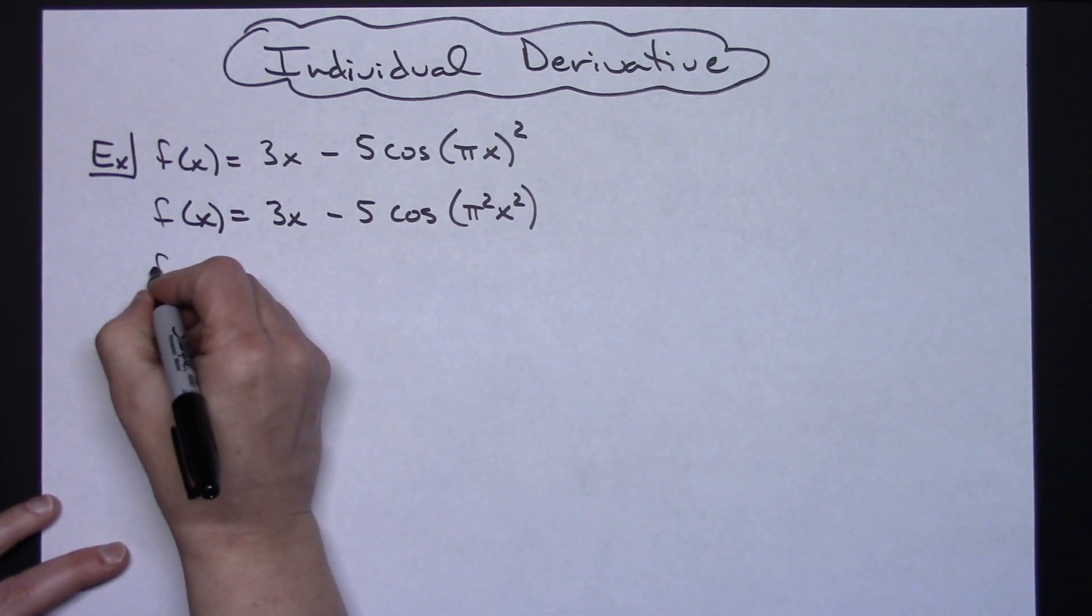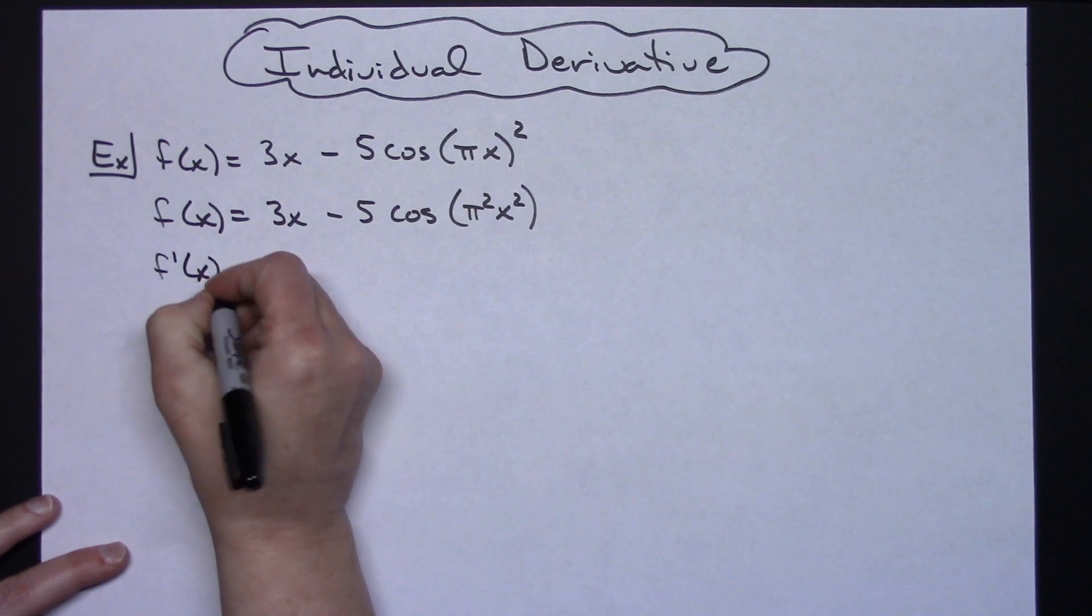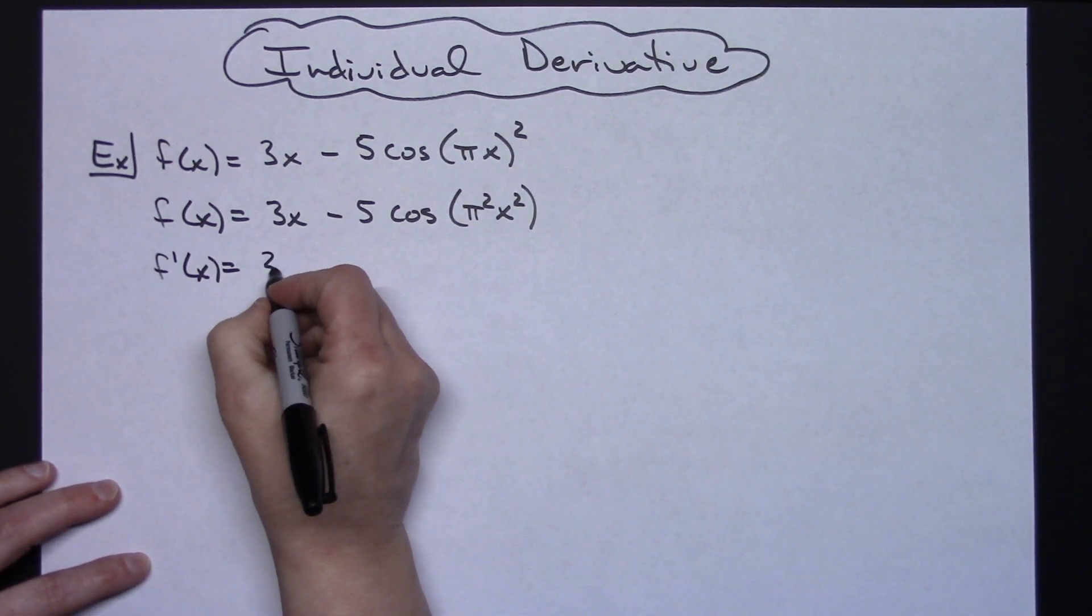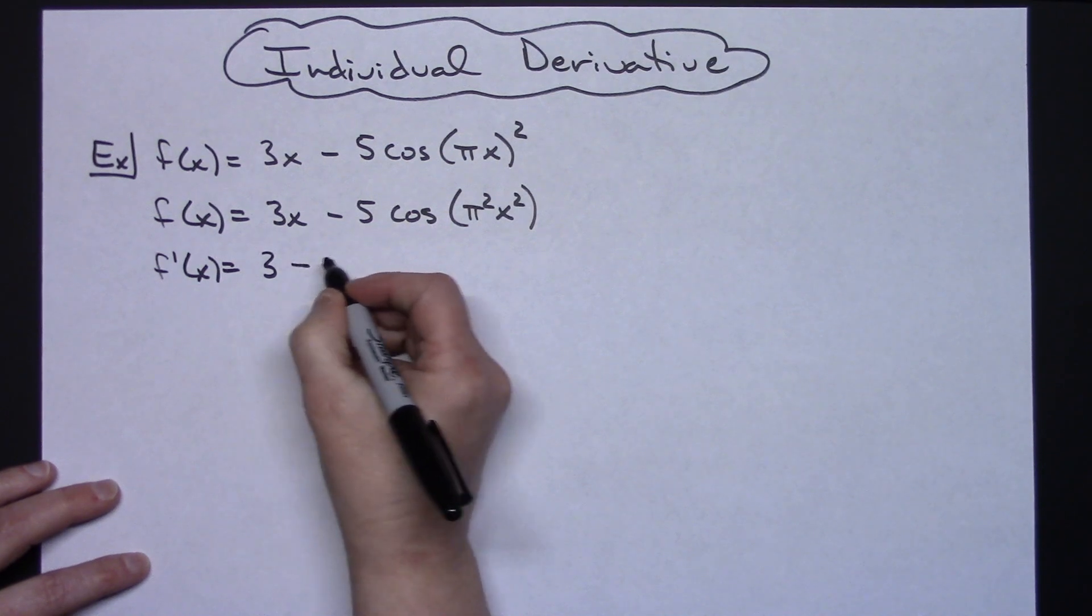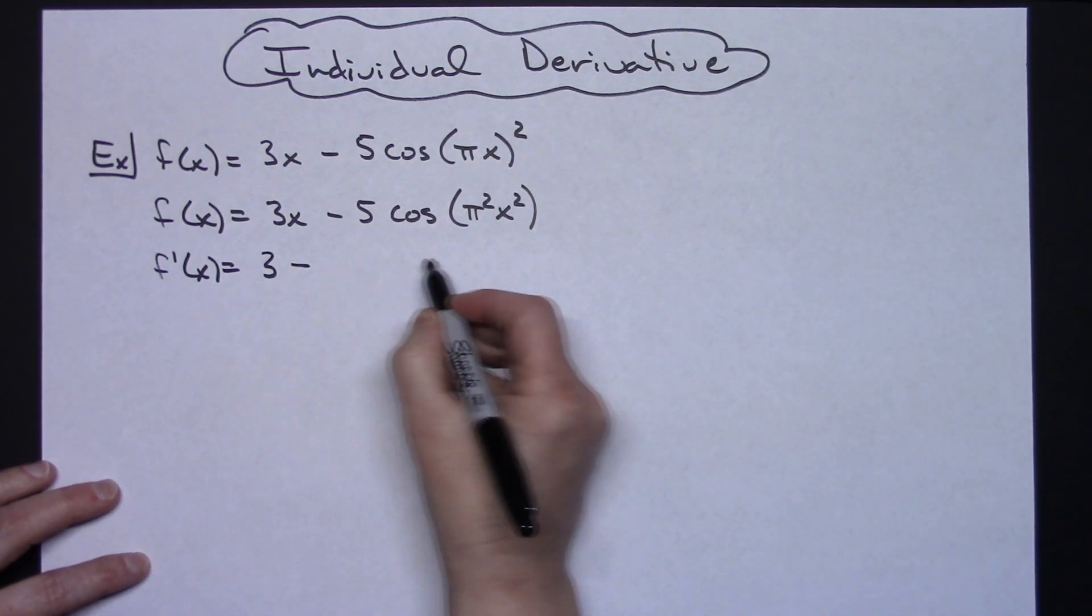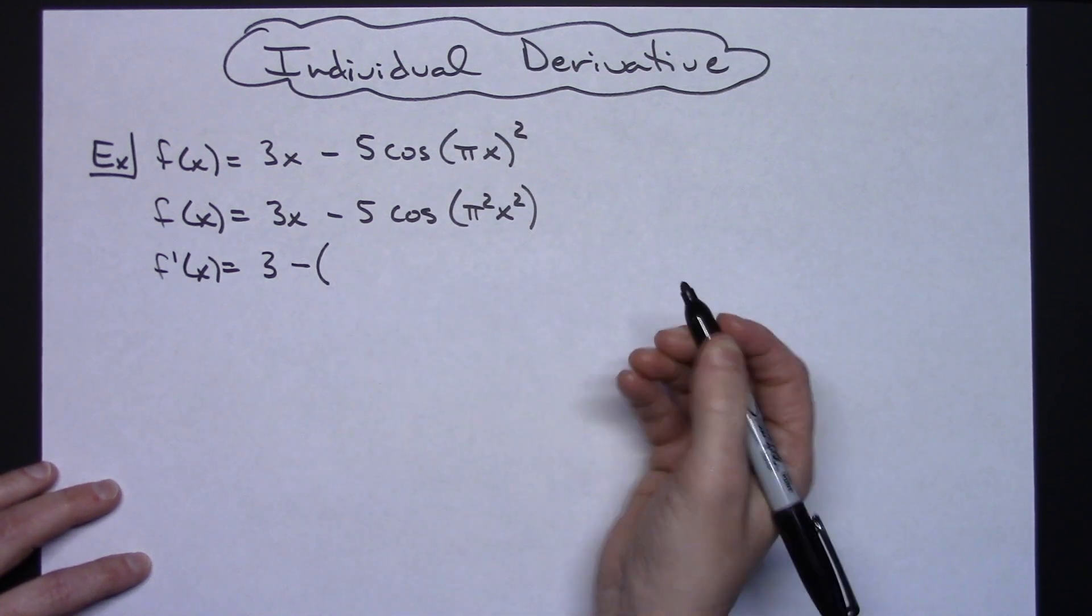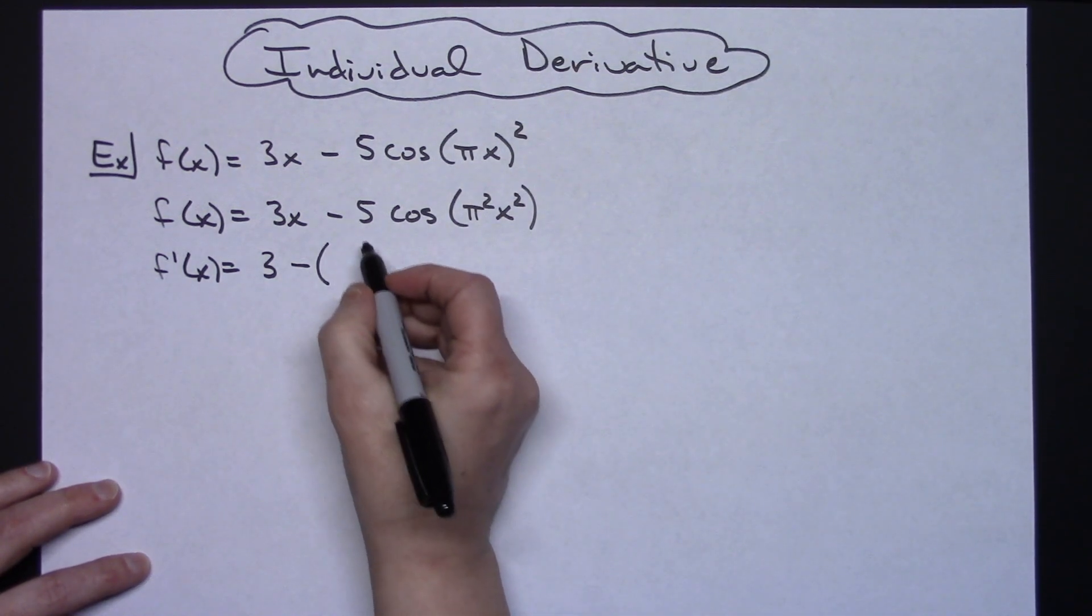Alright so at this point I am now starting my derivative so f prime of x. Now when I take the derivative of the 3x that's just going to go to a 3. Alright now it's going to be minus everything I have to the right here. So just in case this gets really long I'm going to insert an extra piece of parentheses there.